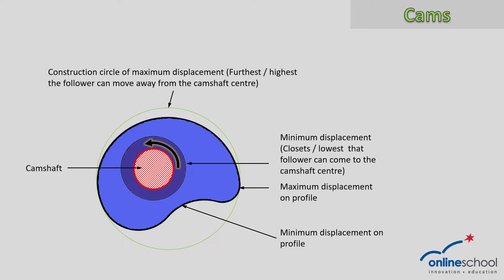Let's quickly focus on the maximum displacement represented by the green construction circle, which is drawn 360 degrees all around the cam disc profile. The idea is to show the maximum displacement of the follower throughout the 360 degrees rotation. Whenever the disc profile reaches the maximum displacement, that is where the follower will be positioned at its maximum. We can also see where the minimum rotation for this particular disc profile would be if the follower reaches its lowest position.